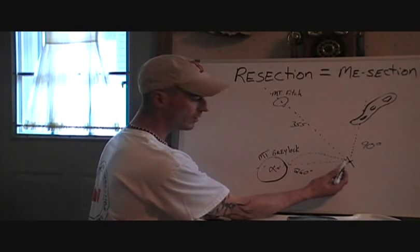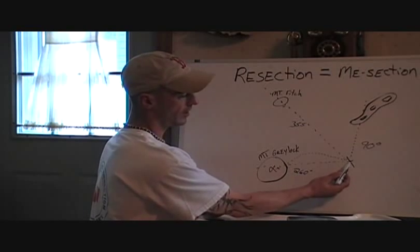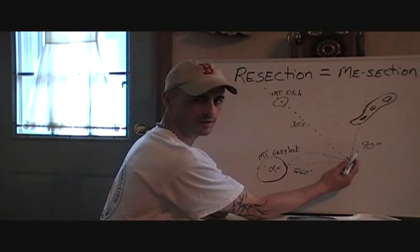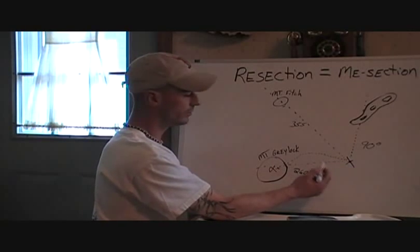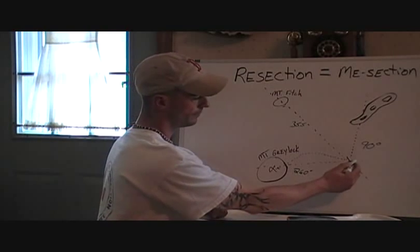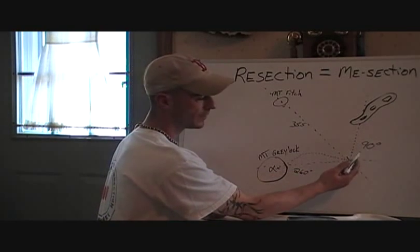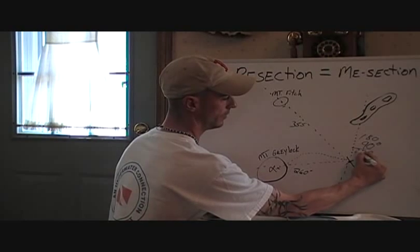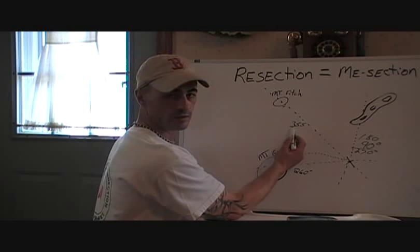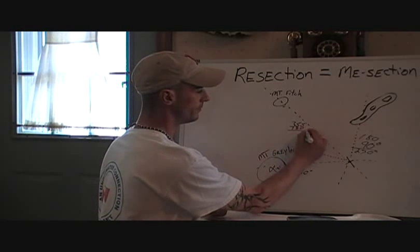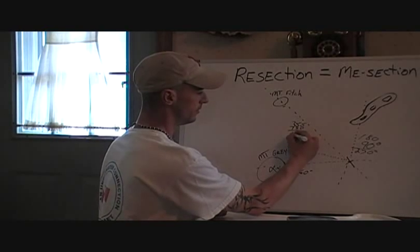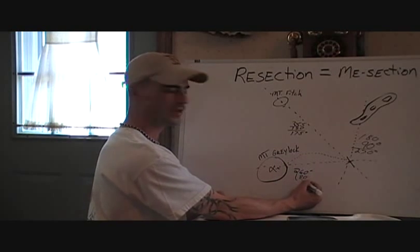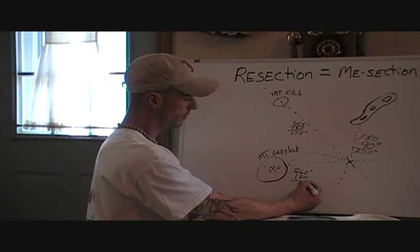To get our resection, there's going to be a lot of math. Our first reading was 90 degrees. Being that it's less than 180, we want to use the back azimuth, so we add 180 to that, giving us 270. Our next one, 355, is greater than 180, so we subtract 180, giving us 175 degrees. Our last one, 260, is also greater than 180, so we subtract 180 and that gives us 80.